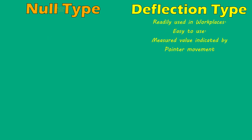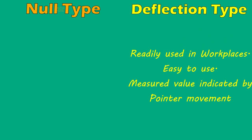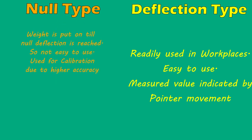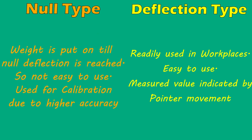Deflection type instruments are readily used in workplaces due to their easy-to-use characteristic, where anyone can read the pressure on the scale. In null type, we need to keep adding and subtracting weight, so it's not easy to use, but its accuracy is quite superior, and due to this it is always used for calibration.